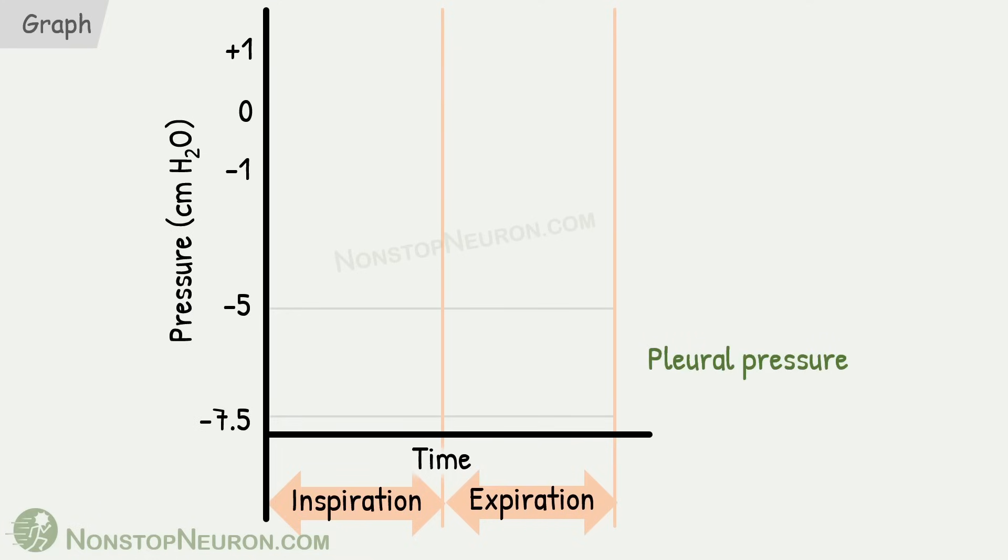First, let's see pleural pressure. Before inspiration, it's about -5 cm of water. As the chest wall expands, it becomes more negative. At the end of inspiration, it's about -7.5 cm of water. Then during expiration, it increases and comes back to -5 cm of water. Then the cycle is repeated with next inspiration.